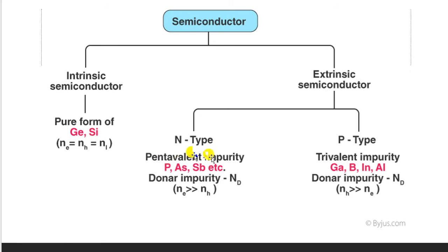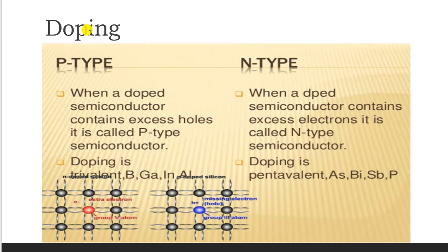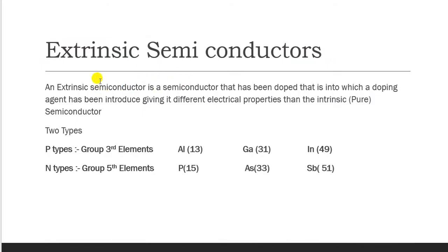For N-type doping, a fifth-group element such as phosphorus, arsenic, or antimony is added to the semiconductor — electrons are the majority charge carriers. For P-type doping, a trivalent impurity such as aluminum, gallium, or indium is added — holes are the majority charge carriers. The process of adding impurity is known as doping.